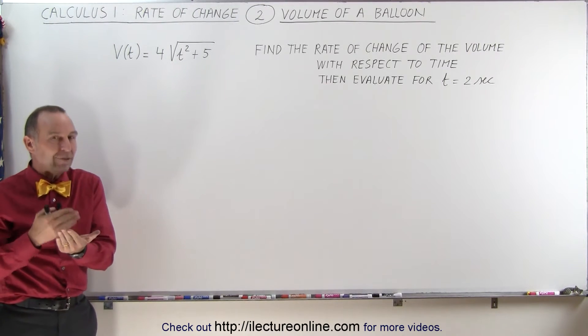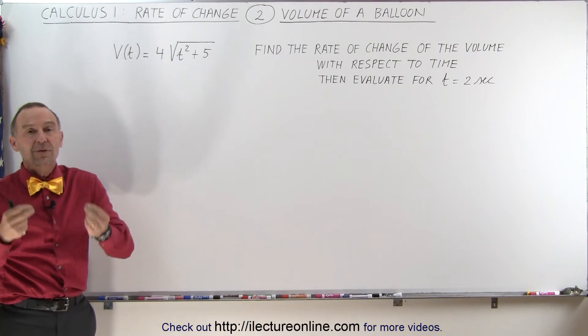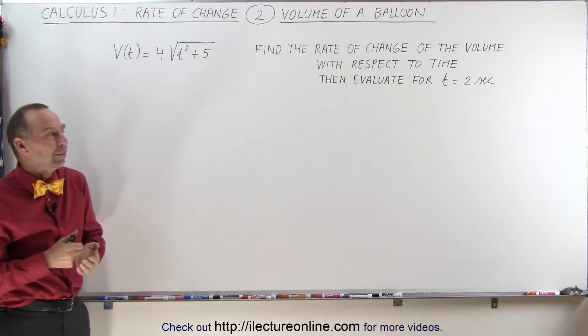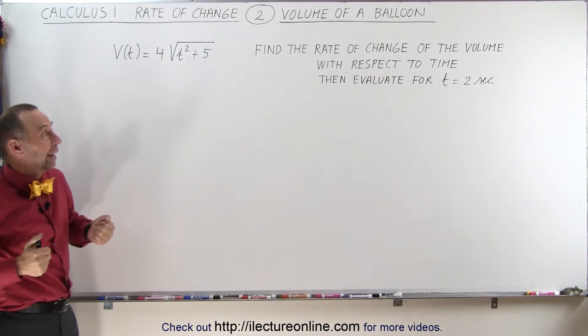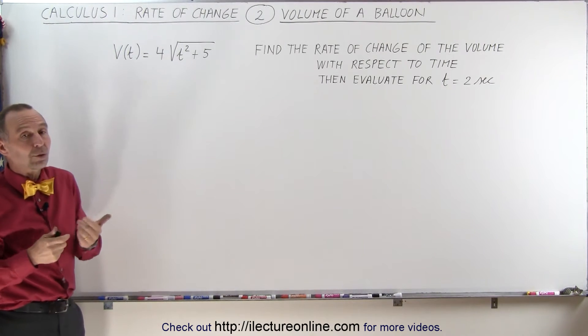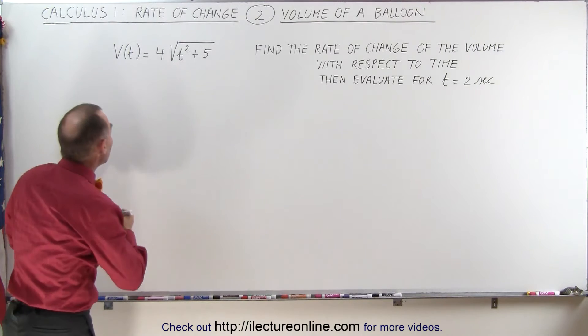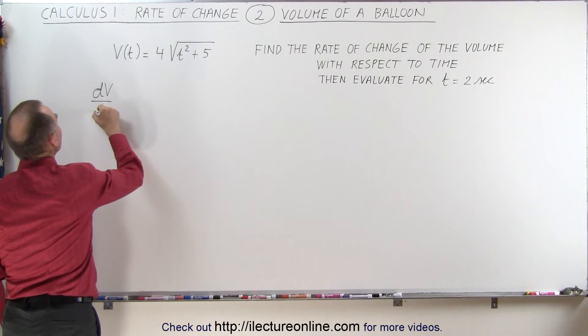So when we hear the words the rate of change, we're thinking about derivative, the derivative of the volume. But then we need to know what we need to take the derivative of with respect to what. And in this case, we're going to do it with respect to time, which means we're looking for dV/dt.